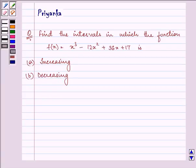Hello friends, how are you all today? The question says, find the intervals in which the function f(x) = x³ - 12x² + 36x + 17 is (a) increasing, (b) decreasing.